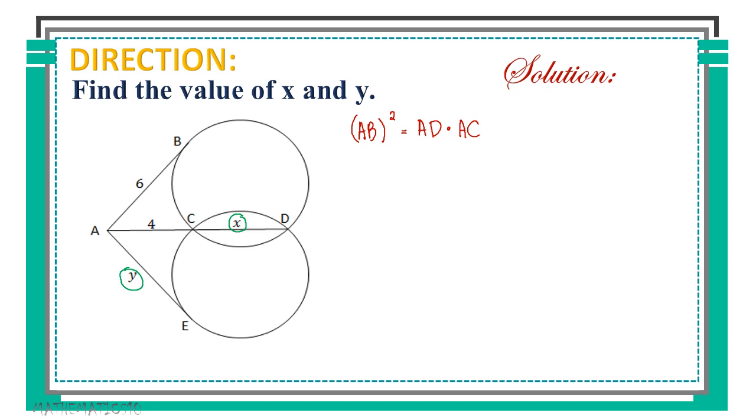Now, let us substitute. As you can see, we have AB here and it's given which is 6. So, 6 squared equals our AD. Since we don't know yet the measure of segment CD and to get the length of the entire secant, we are supposed to add 4 and the measure of segment CD. Since it is represented by X, we can have measure of AD as X plus 4. And lastly, multiply it with the measure of external segment which is 4. Now, 6 squared is 36 equals X plus 4 times 4.